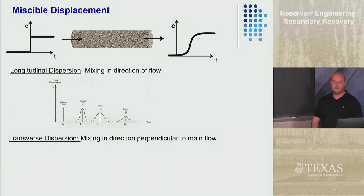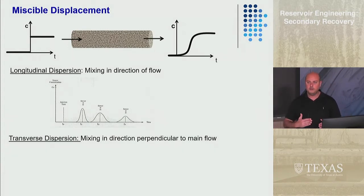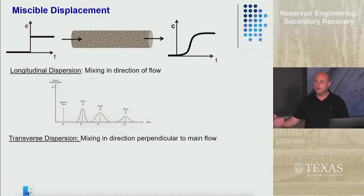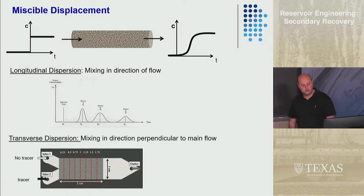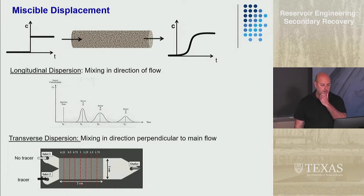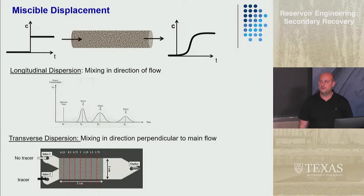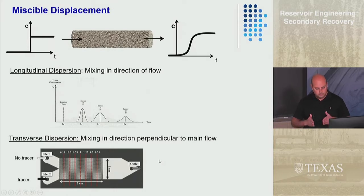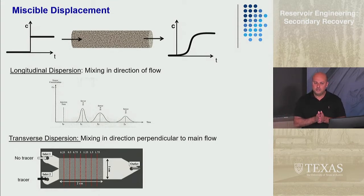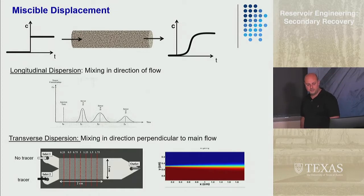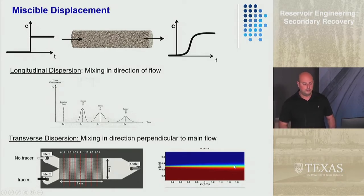The other type is transverse dispersion — that word means perpendicular, so it's in the direction perpendicular to flow. To give an example: in a micromodel experiment, at one inlet you inject pure water and at the other you inject water with a tracer component. The bottom will mostly have the tracer component and the top will be pure water. But at the interface they start to mix a little bit, and as you go further downstream there is more and more mixing at that interface.